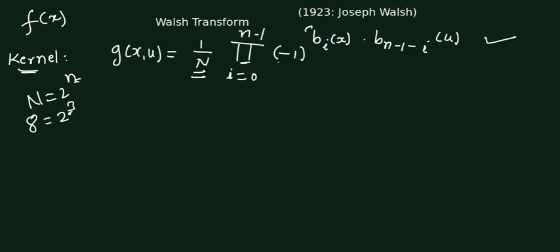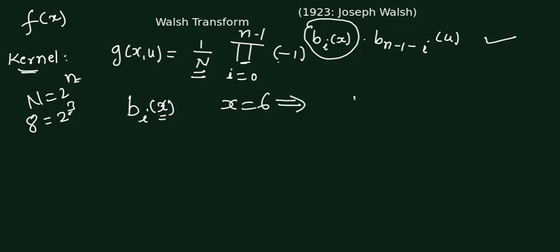The important thing in this kernel is how to calculate bi(x). For a given x value, let us say x equals 6, you have to write its binary representation. The binary representation of 6 is 1 1 0. In this binary representation we have locations: the 0th location, first, and second — these correspond to the index i.